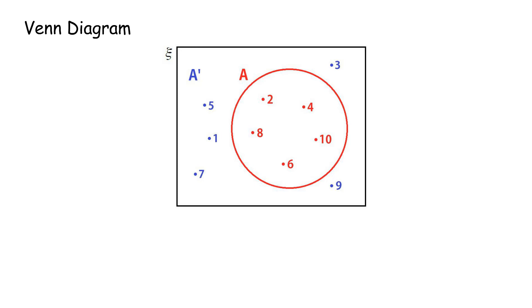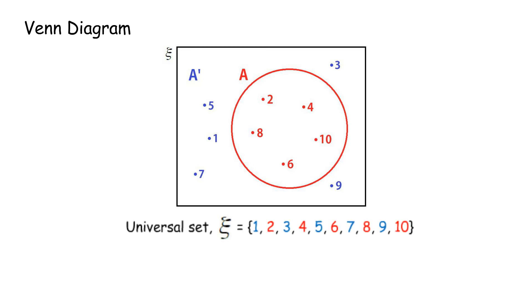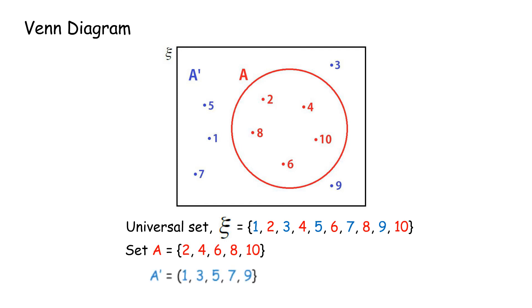In this diagram, Universal Set = {1, 2, 3, 4, 5, 6, 7, 8, 9, 10}. Set A = {2, 4, 6, 8, 10}. Set A' = {1, 3, 5, 7, 9}.